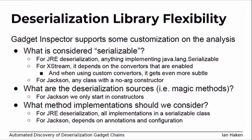For JRE deserialization, anything implementing Serializable is considered a serializable class. But for XStream, it depends on what converters you've enabled. For Jackson, basically any class with a no-arg constructor is considered serializable and your only entry points are no-arg constructors. There are lots of differences between libraries, but all those things can be easily tweaked and parameterized in this analysis. This is what makes this tool especially powerful — you might be working in some custom context doing unusual forms of deserialization that aren't well studied yet by MarshallSec or YSO Serial.